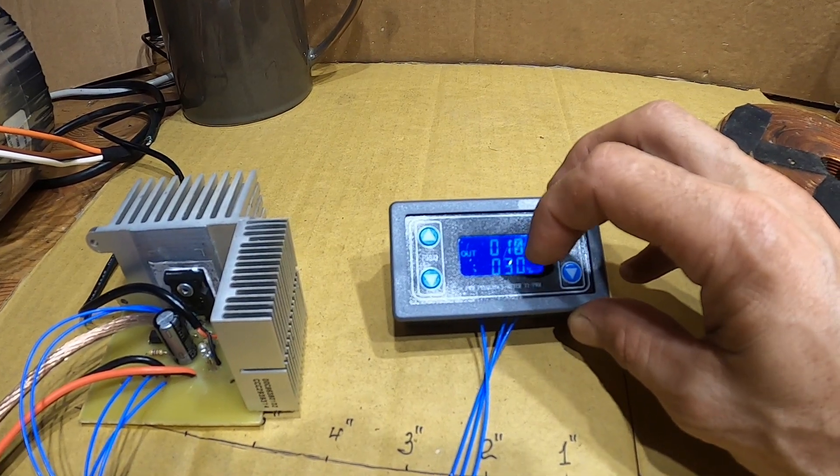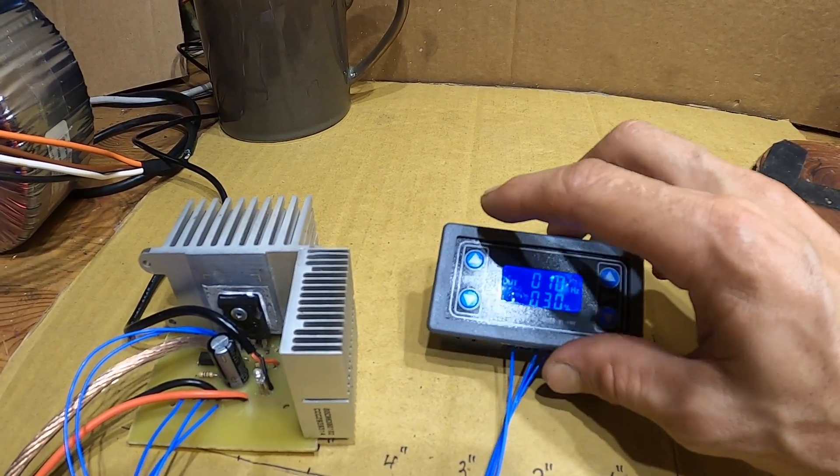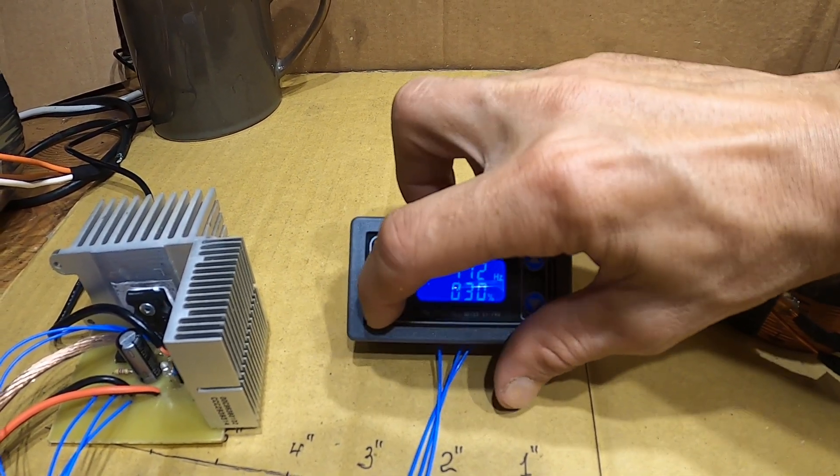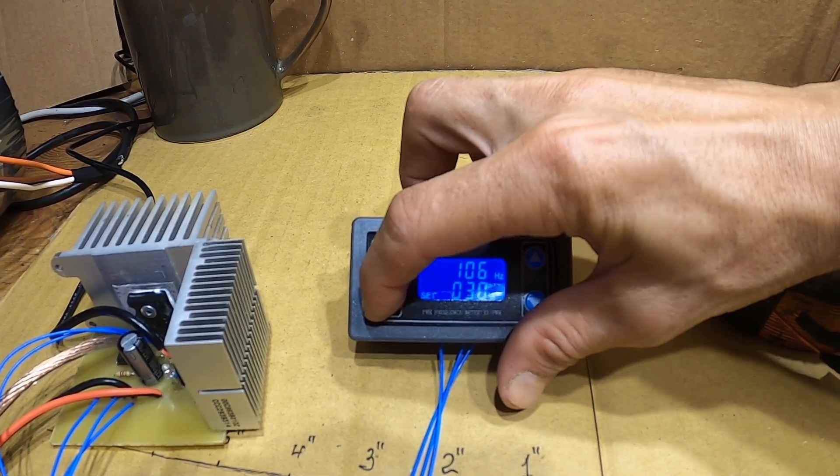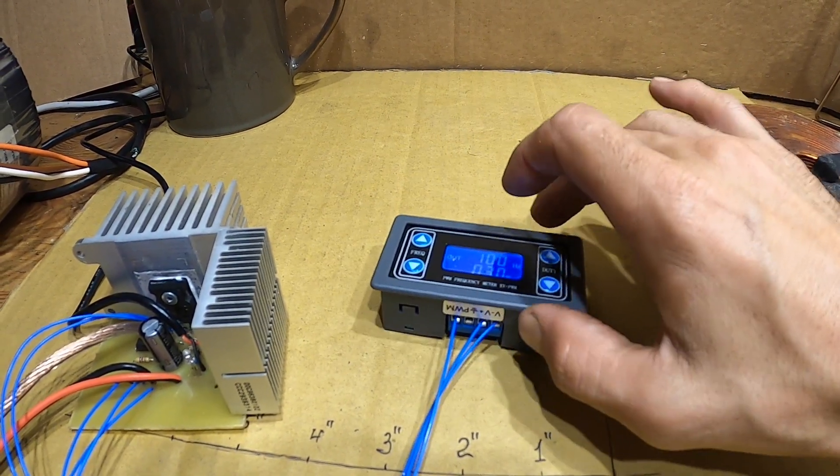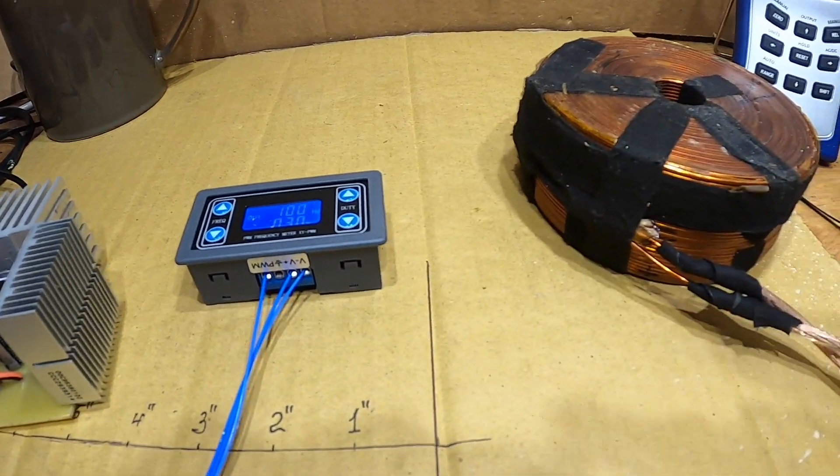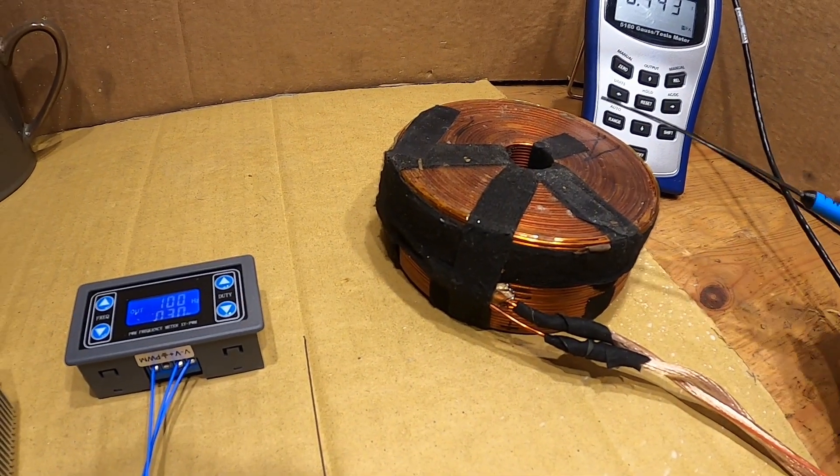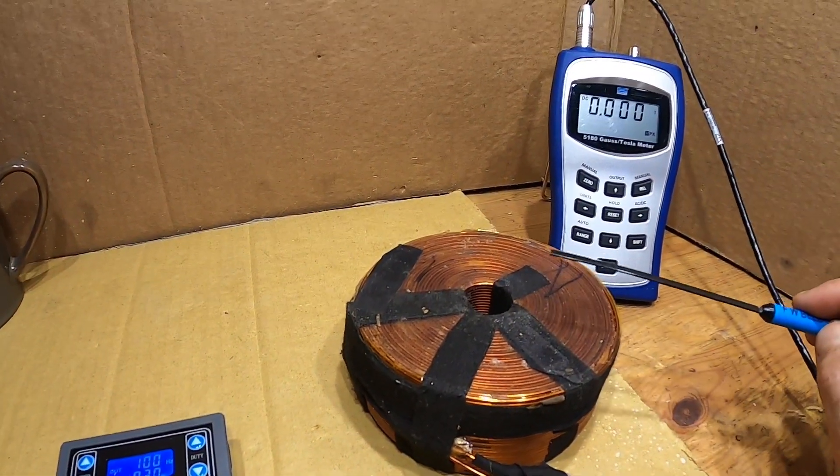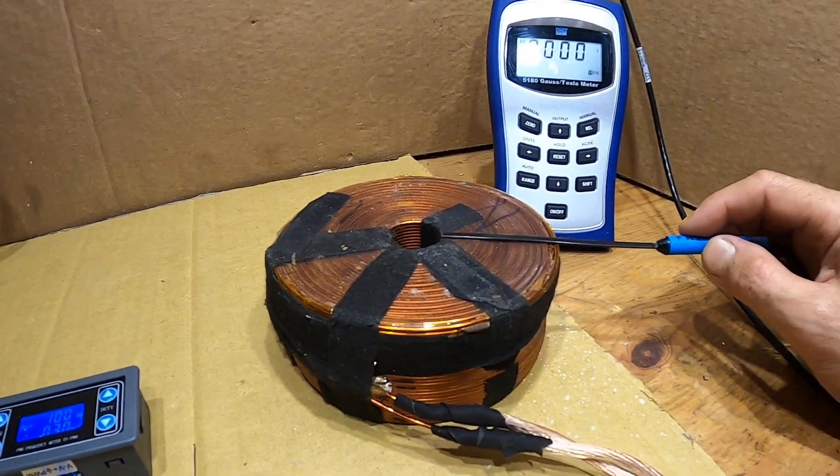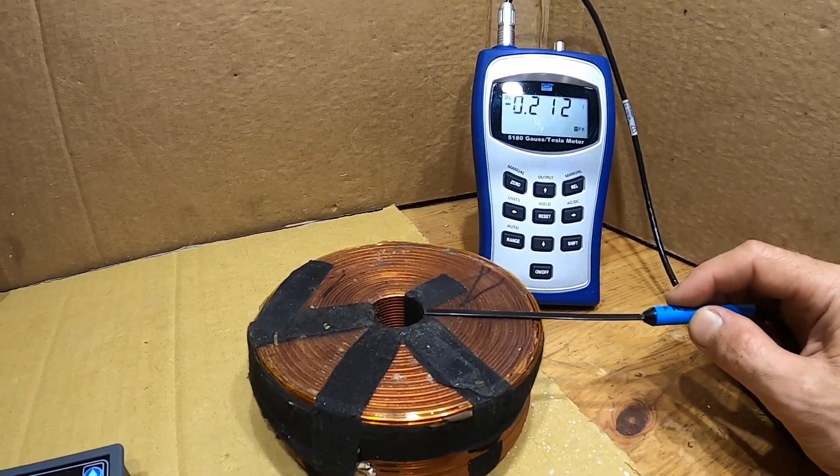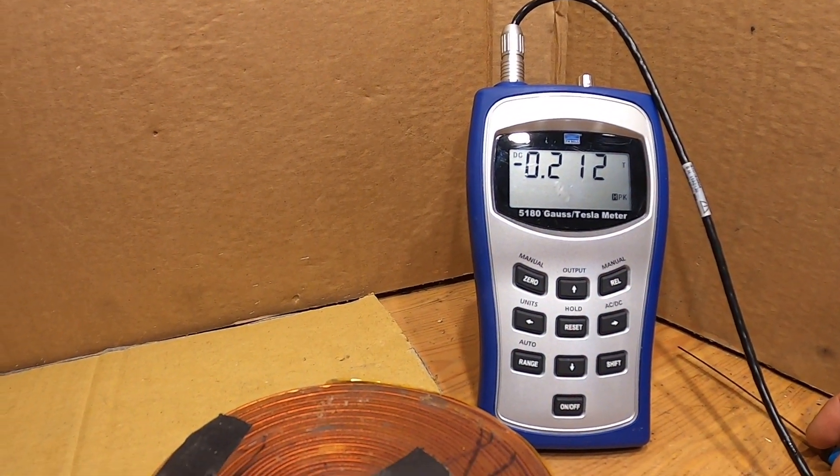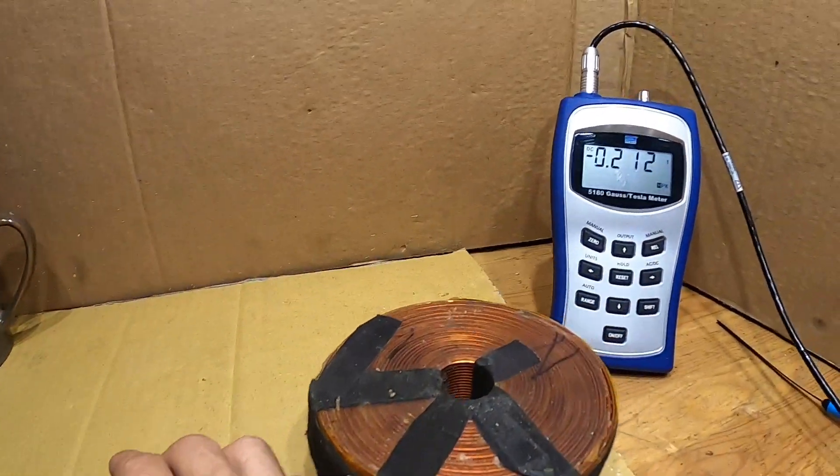Okay, with the 30% duty, let's go ahead and increase the frequency to 100 Hertz and we'll keep the duty at 30%. On the count three, reset the voltage. One, two, three. Okay, 0.21 Tesla guys, 0.2 Tesla, that's two thousand gauss.